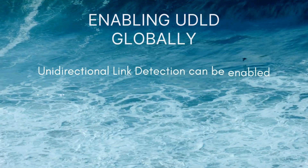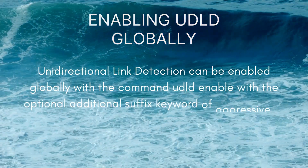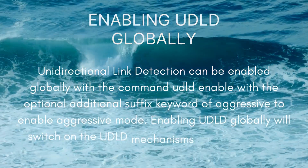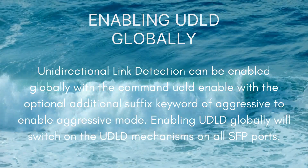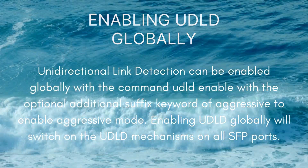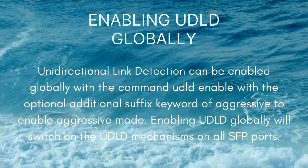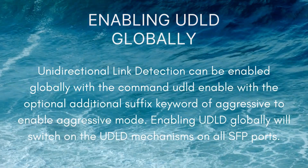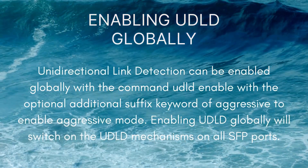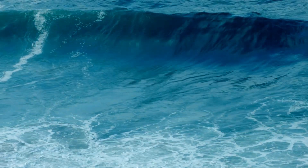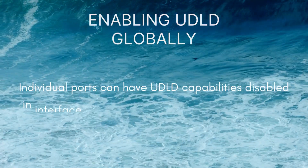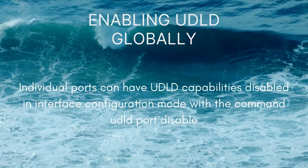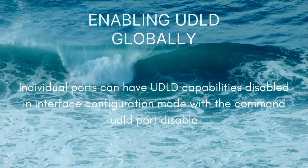Unidirectional Link Detection can be enabled globally with the command 'udld enable', with the optional additional keyword 'aggressive' to enable aggressive mode. Enabling UDLD globally will switch on the UDLD mechanisms on all SFP ports. Individual ports can have UDLD capabilities disabled in interface configuration mode with the command 'udld port disable'.